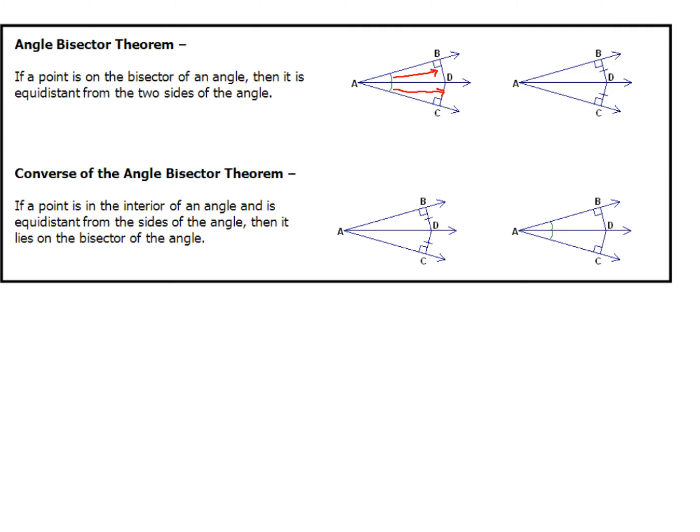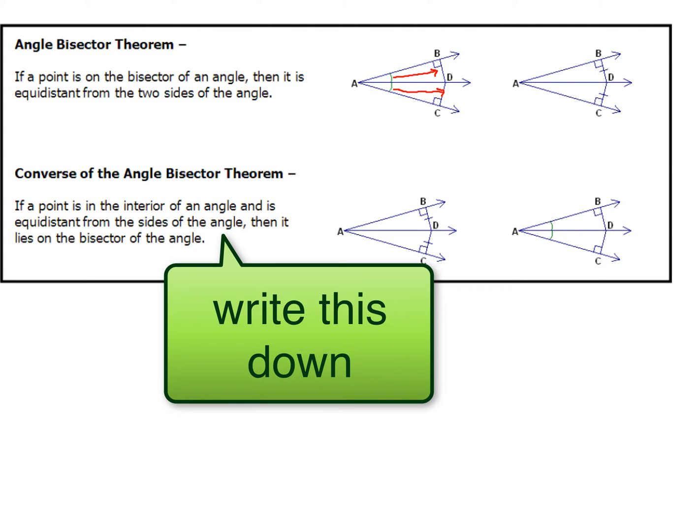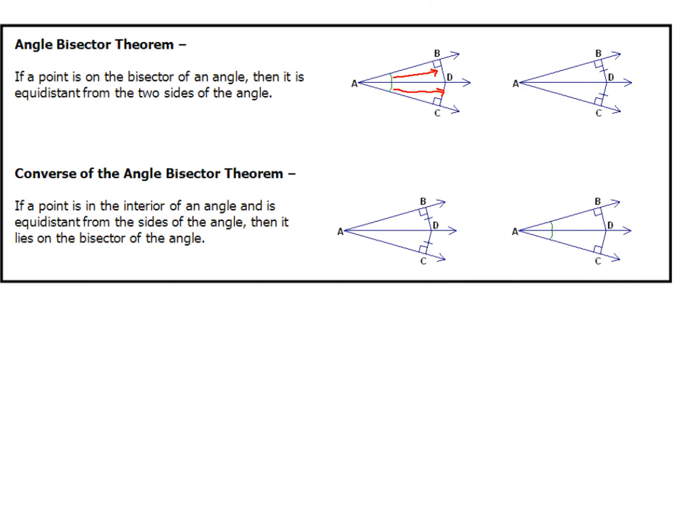But that's not the only thing that's true. The angle bisector theorem also has its own converse. That says if a point is on the interior of an angle and it's equidistant from the sides of the angle, then it lies in the bisector of the angle. So if you see this piece right here, like BD is the same thing as DC, then that means angle BAD is going to be the same angle as angle CAD. A picture is worth a thousand words. So if you see a picture like that, you guys will know what to do.